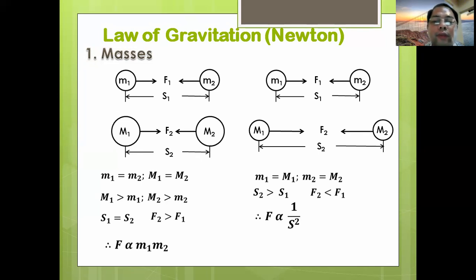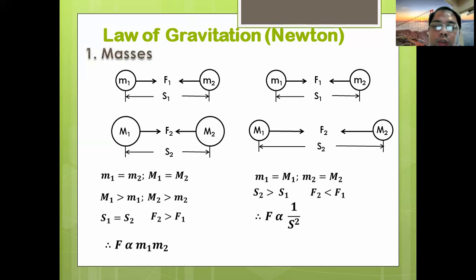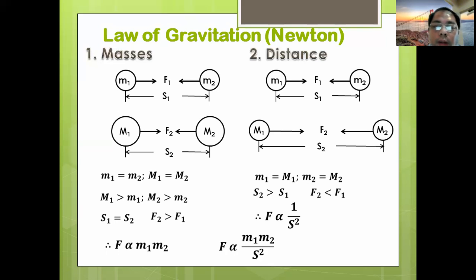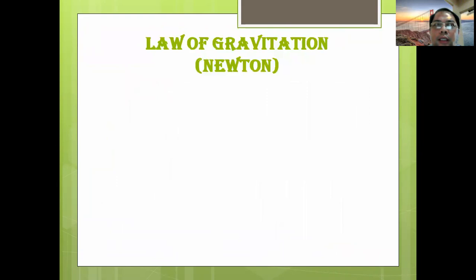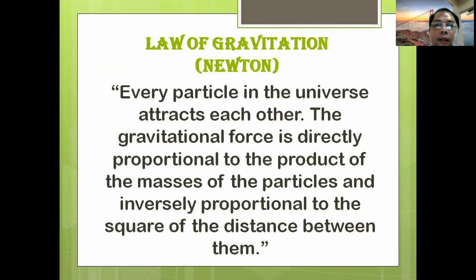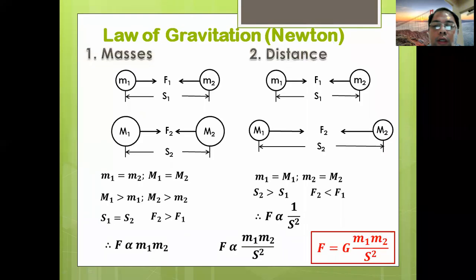So gravity — gravitational force is affected inversely by the square of the distance between the objects. It is directly proportional to the product of the masses, and inversely proportional to the square of the distance. When we make the equation equal, we have to add a constant called G — the gravitational constant. Its value is roughly 6.67 times 10 to the negative 11. That's a constant added to our equation.